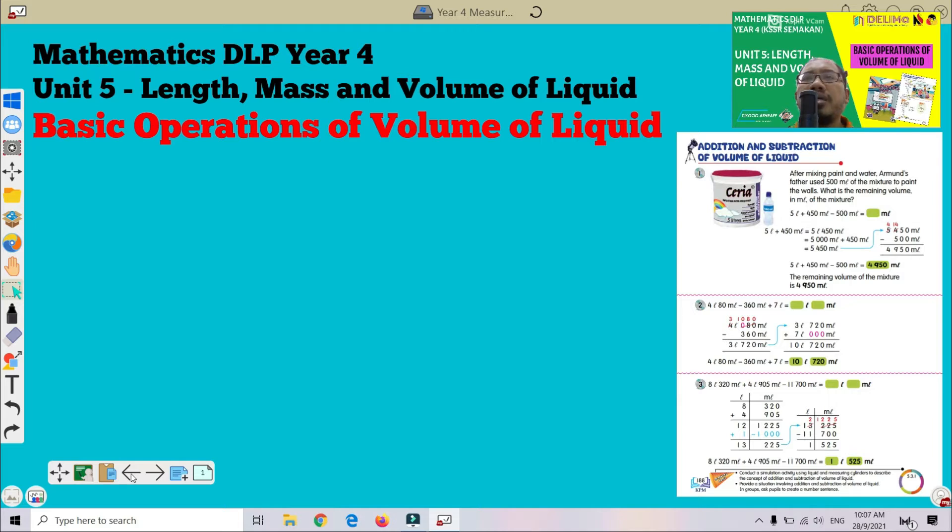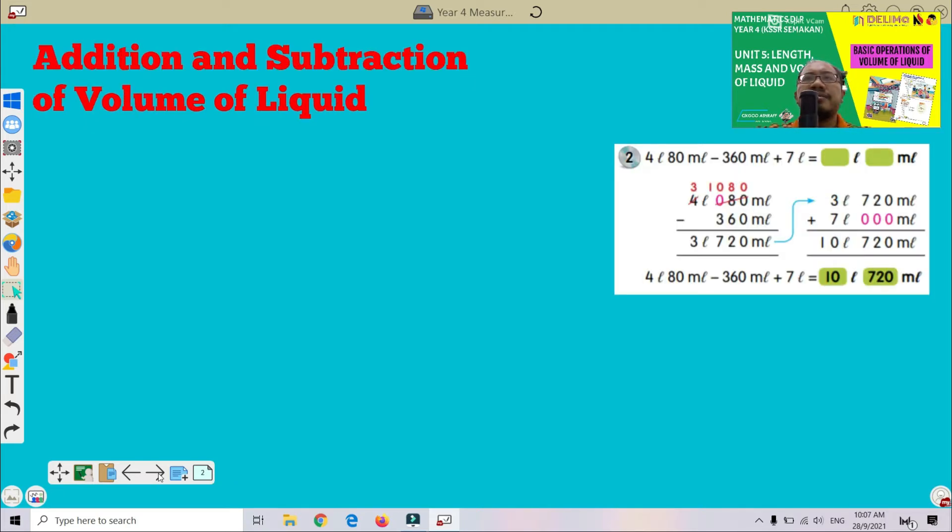Let's try question number two on page 188. 4 liter 80 milliliter minus 360 milliliter plus 7 liter. The answer should be in liter and milliliter.